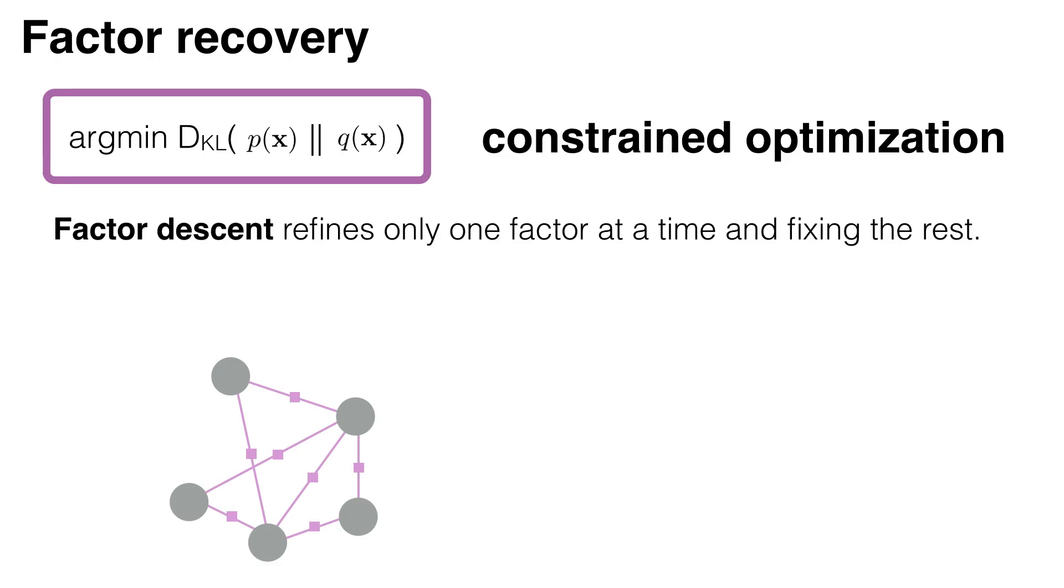What is Factor Descent? It is a new method to solve this constrained optimization. It refines only one factor at a time and fixes the rest. Each step is solved directly with an analytical solution. No fitting to linear or quadratic functions is performed.